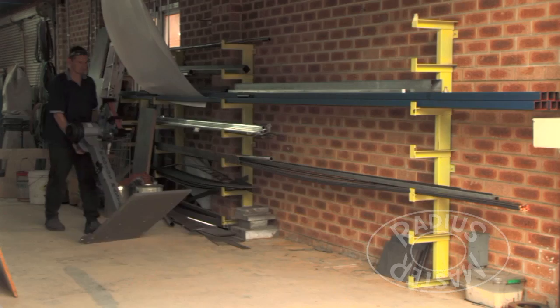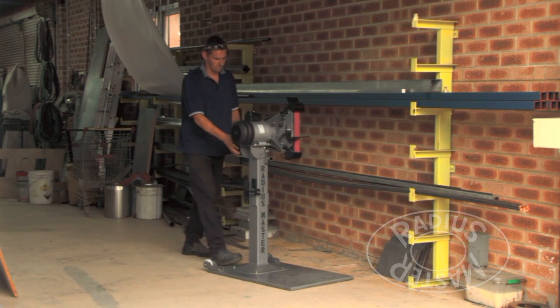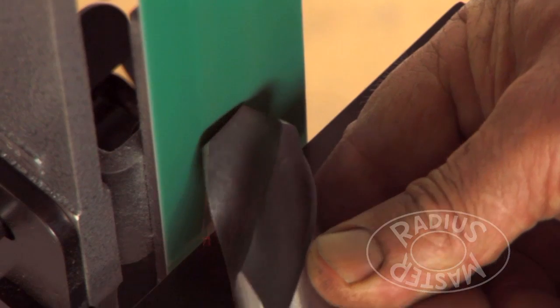The Radius Master can go to the cutting source. Deburring can keep pace with any automatic cutting operation, thus eliminating this cost entirely.